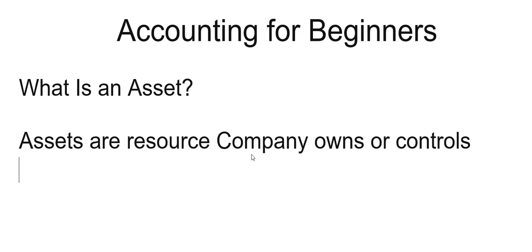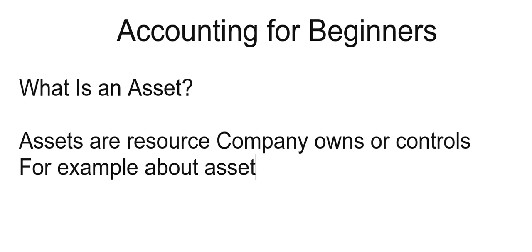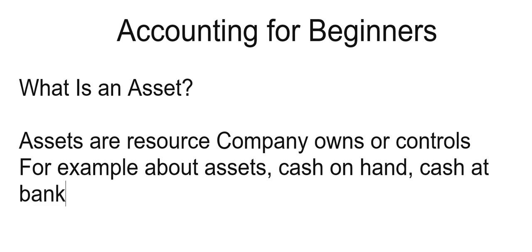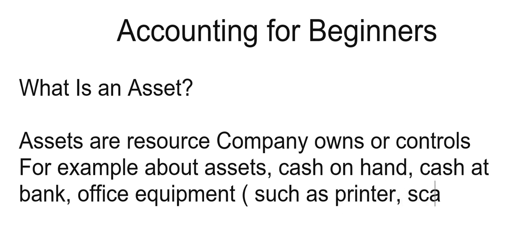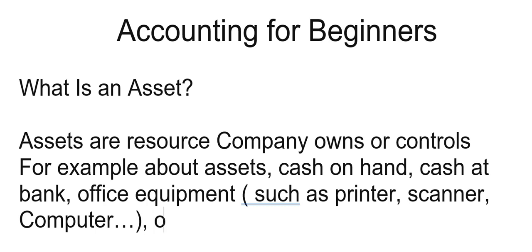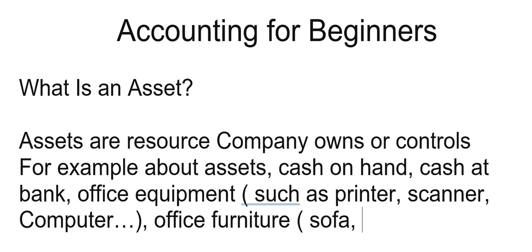Today I'll give you some examples of assets. Cash on hand, cash at bank — 50k. Office equipment, yes — such as printer, scanner, computer, and office furniture.